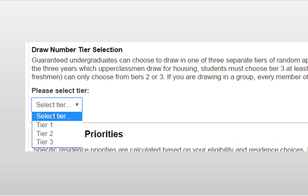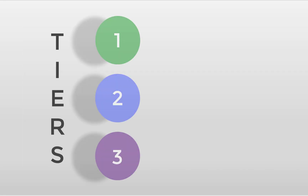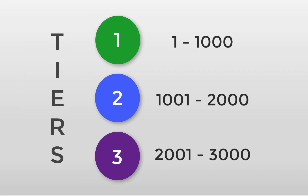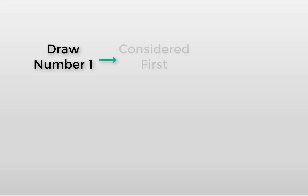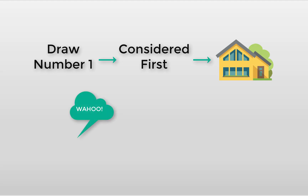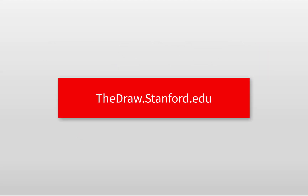On your application you're going to select a tier level. The tier you choose dictates the range of numbers from which your random draw number will be assigned. The draw number dictates the order in which you are assigned — the lower your draw number, the sooner your application is considered, and the sooner your application is considered, the more likely you are to get your top housing choice. There's more to know about tiers than draw numbers; check out our tier video at draw.stanford.edu to learn more.